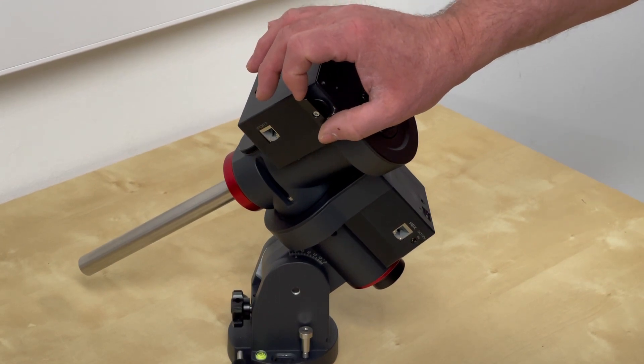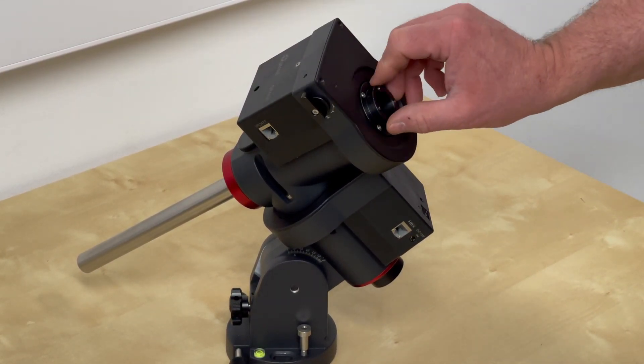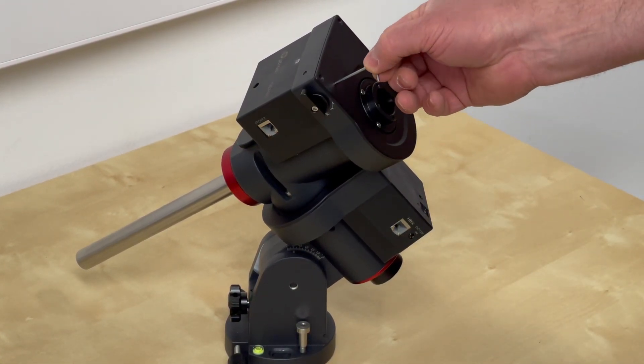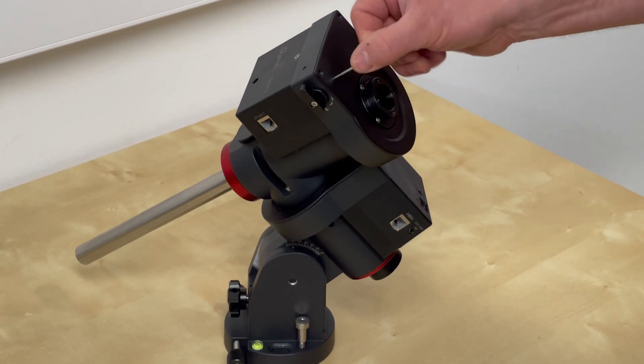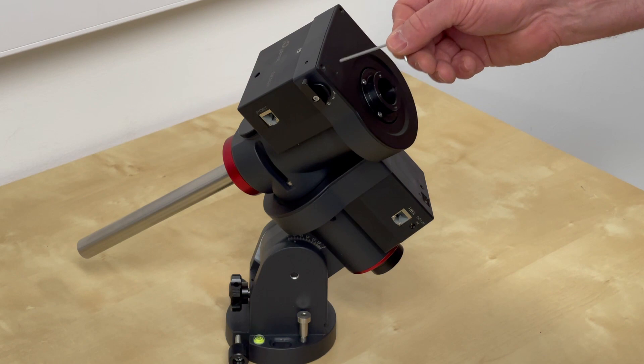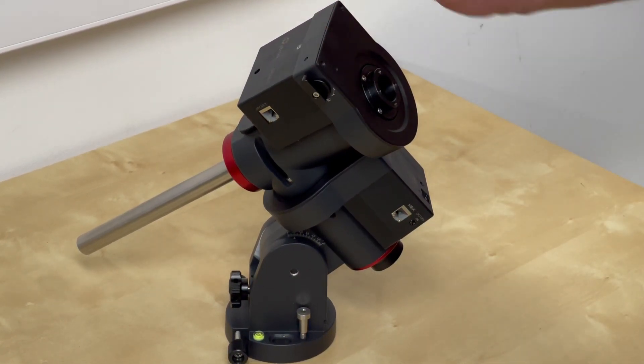This is a quarter turn engagement, make sure it is engaged then we can use the 2mm Allen key to unlock the grub screw in here which clamps the adjustment screw. Don't undo it all the way as it will fall out. Do it through this hole then adjust in there.